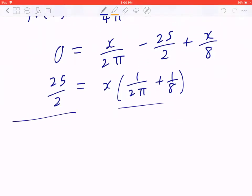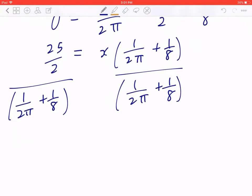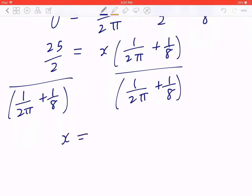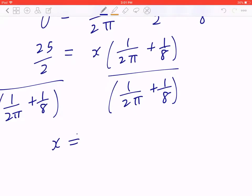The opposite of multiplying is to divide. So you can divide both sides by 1 over 2 pi plus 1 over 8. Again, if you take your calculator and you work this out, and you're rounding this to the nearest whole, x equals approximately 44 centimeters.